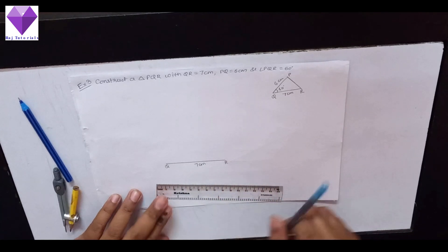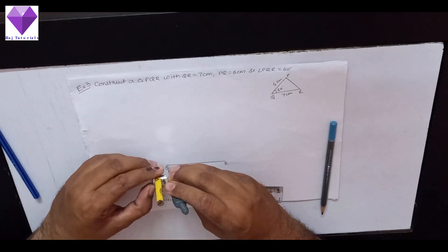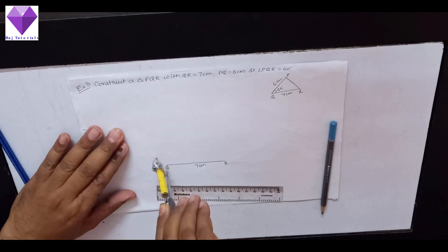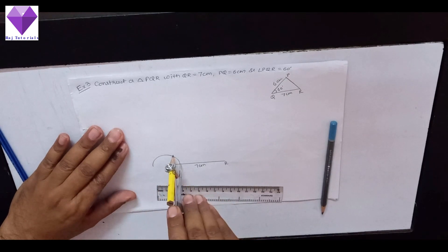Now, here at Q, I have to draw a 60 degree angle. So to draw 60 degree angle, I will draw a semicircle of any radius. With the same radius, I will cut the arc with this as center. So I will get 60 degree.